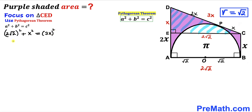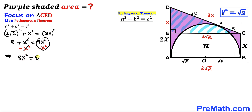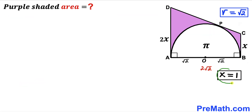Filling in the Pythagorean formula: (2√2)² + x² = (3x)², which simplifies to 8 + x² = 9x². Subtracting x² from both sides gives 8x² = 8. Dividing both sides by 8 gives x² = 1, and taking the square root gives x = 1.